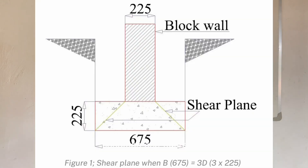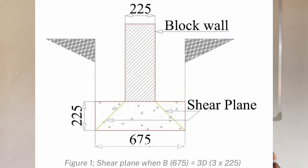Condition 1, figure 1. In this condition, B is equal to 3D. This is always provided in a suitable soil where the soil bearing capacity is very adequate. In this condition, the width provided is enough to transfer the structural load to the earth.